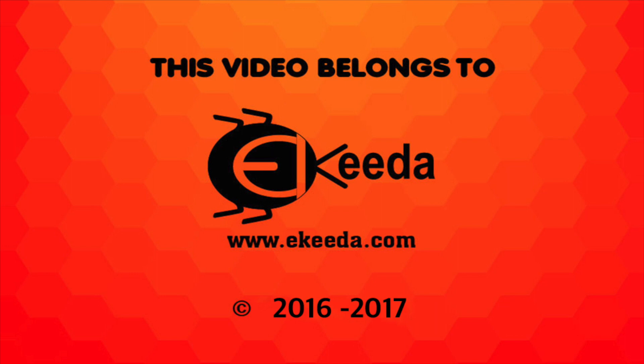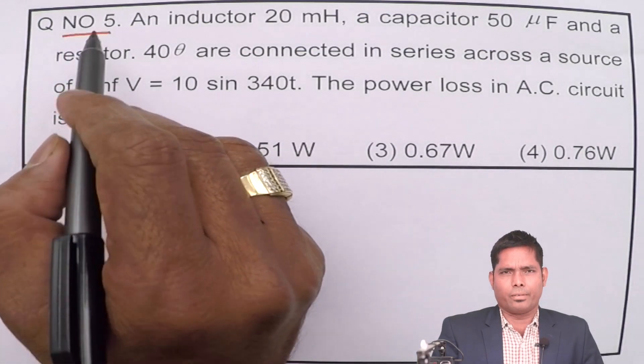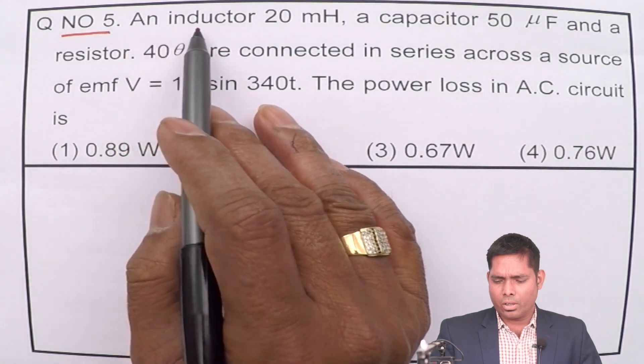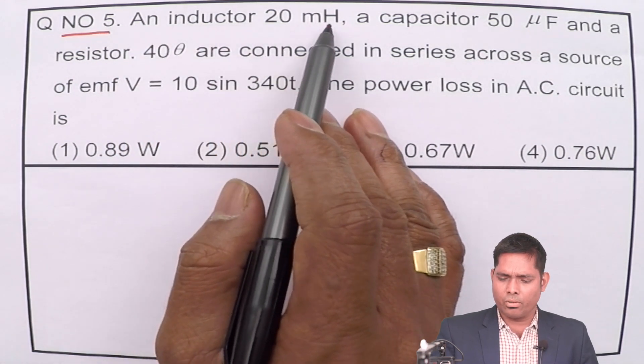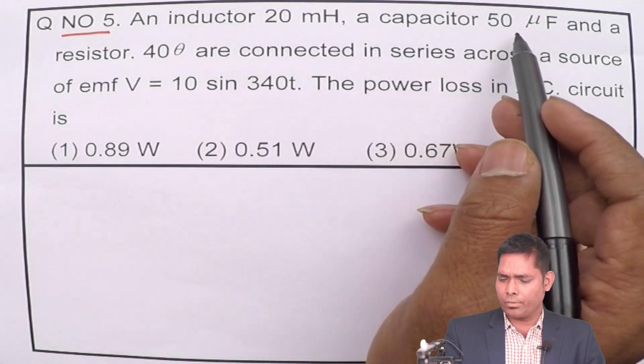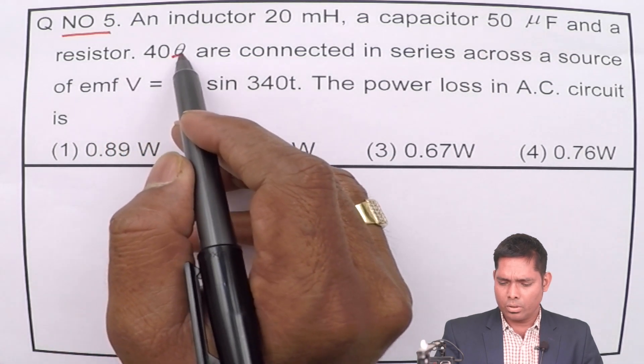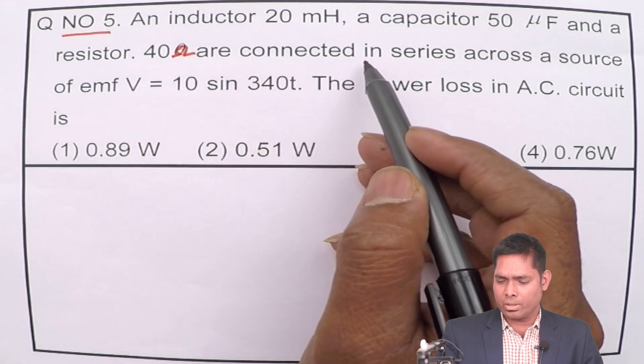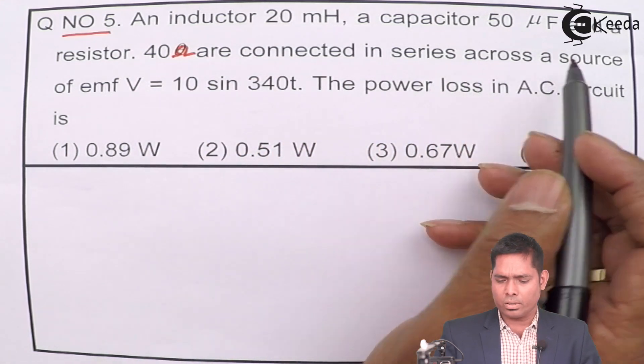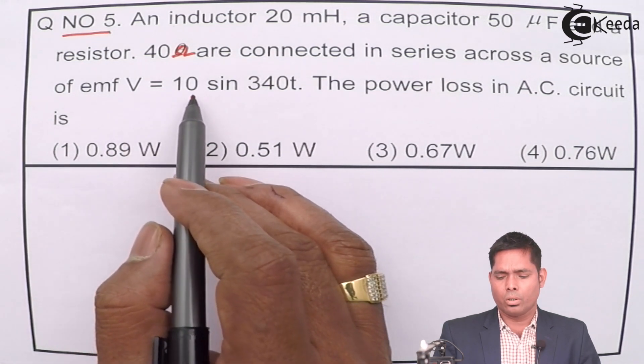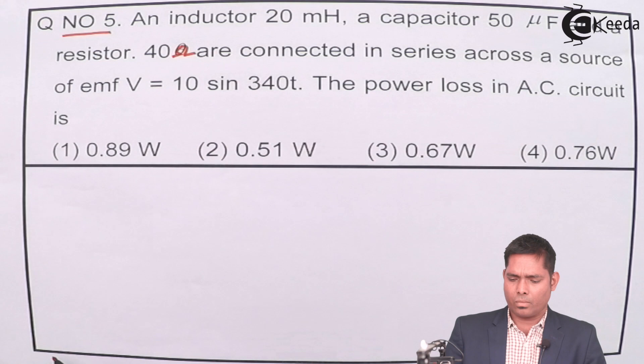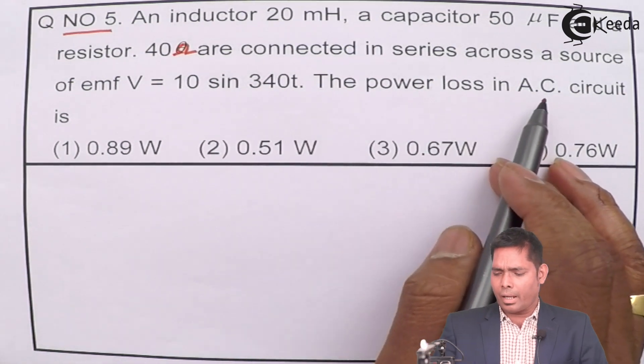Students, in this video we will discuss question number 5, NEET Physics Paper 2016. Let us solve question number 5. The question says an inductor 20 mH, a capacitor 50 microfarad and resistor 40 ohm are connected in series across a source of EMF V equals 10 sin 340t. The power loss in AC circuit is...